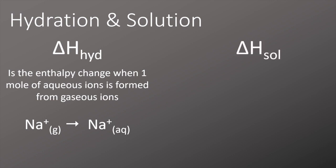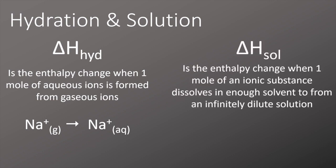The enthalpy change of solution is subtly different and that's the enthalpy change when one mole of an ionic substance dissolves in enough solvent to form an infinitely dilute solution. That can be shown with NaCl forming Na plus ions and Cl minus ions. The equation looks the same but it's that infinitely dilute solution that's important.